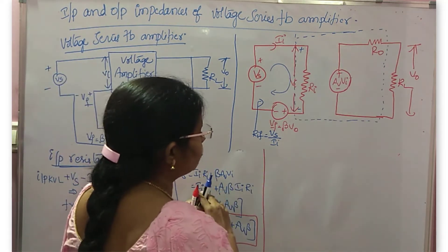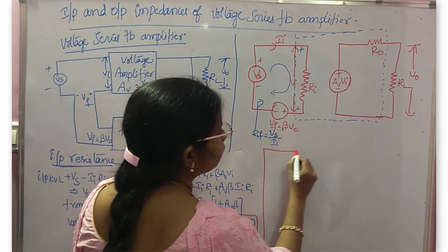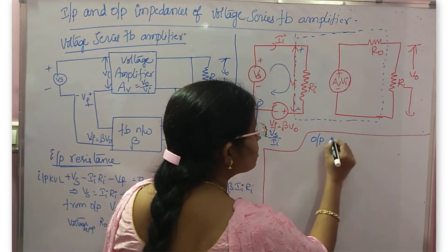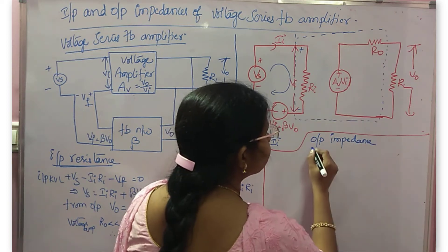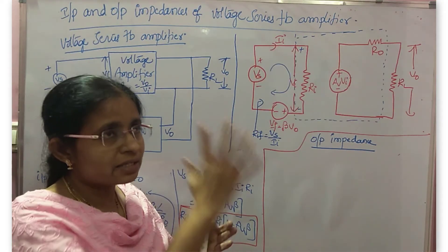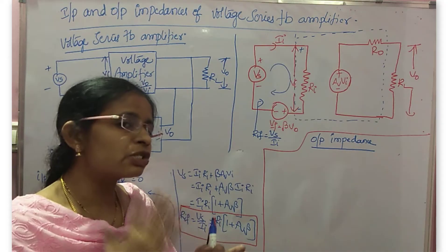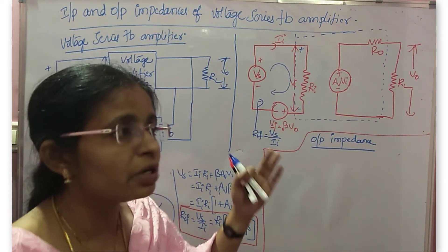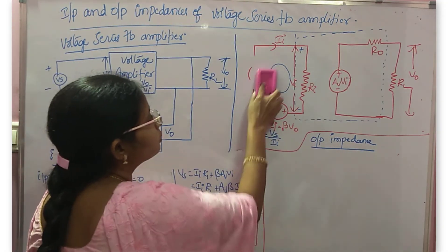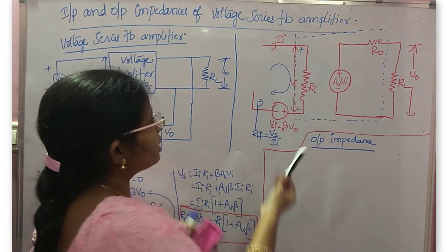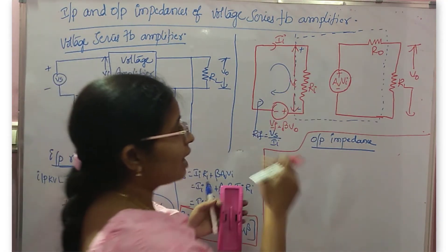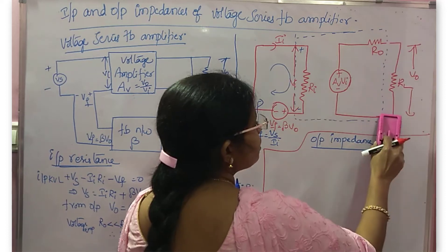Now let us find the output impedance. To find the output impedance — the impedance at the output side separately — the output must not be affected by the input. That is the reason, whenever you have a voltage source at the input side, while finding output impedance you have to make it short. So make it short. And then you have to disconnect RL.